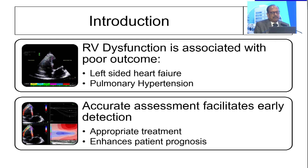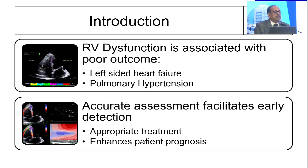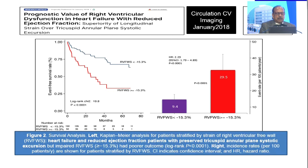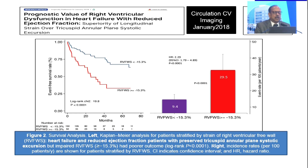Talking of RV dysfunction, it is always associated with very poor outcome, whether left side diseases or right side diseases. Accurate assessment is very important for appropriate diagnosis, treatment, and prognosis. Let's look at this slide published in January 2018 on the prognostic value of right ventricular dysfunction in heart failure with reduced ejection fraction.